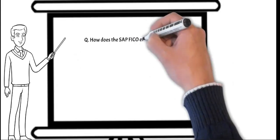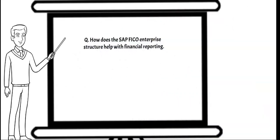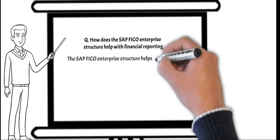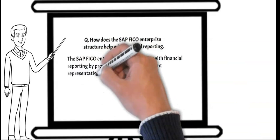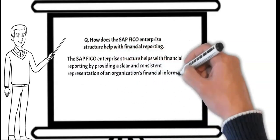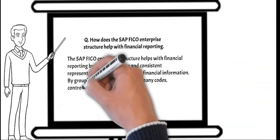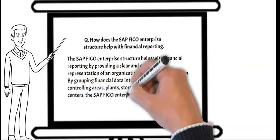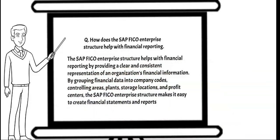Next question: how does the SAP FICO enterprise structure help with financial reporting? The SAP FICO enterprise structure helps with financial reporting by providing a clear and consistent representation of an organization's financial information. By grouping financial data into company code, controlling area, plant, storage location, and profit center, the SAP FICO enterprise structure makes it easy to create financial statements and reports.